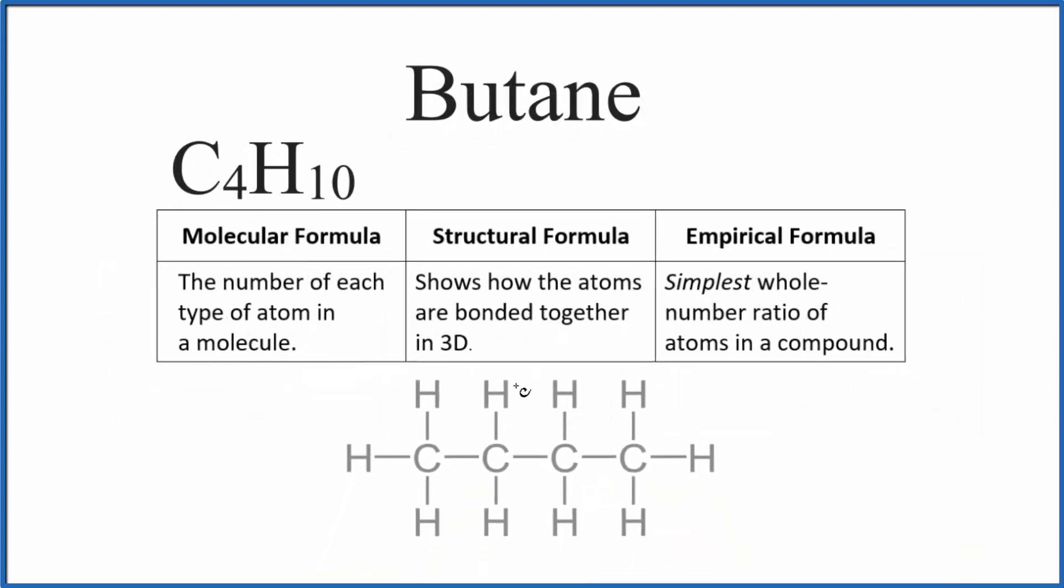In the structural formula here, we can see that we have one, two, three, four carbons, and then you count the hydrogens, we'll have 10 of those. And it shows us how they're bonded together. In this case, for butane, it's an alkane, so it's all single bonds.